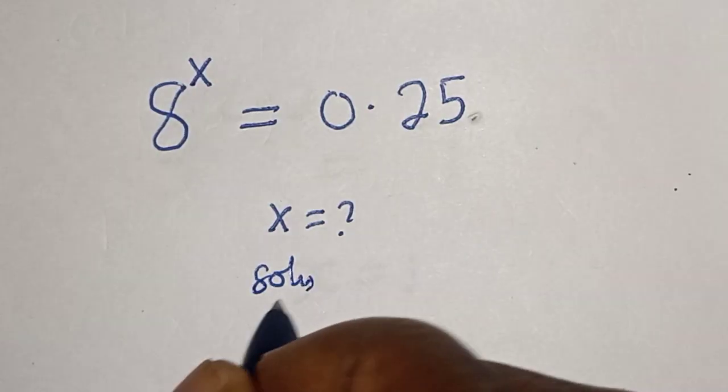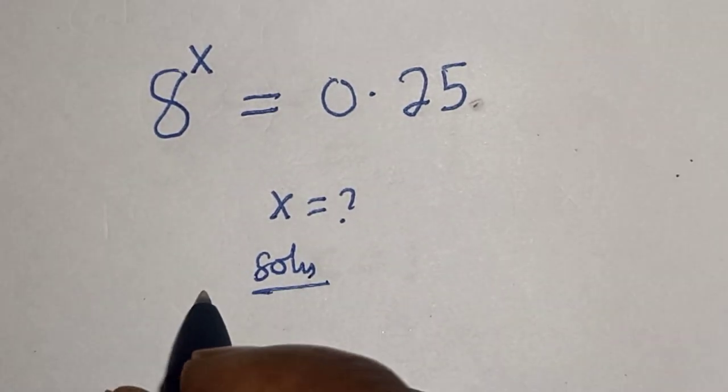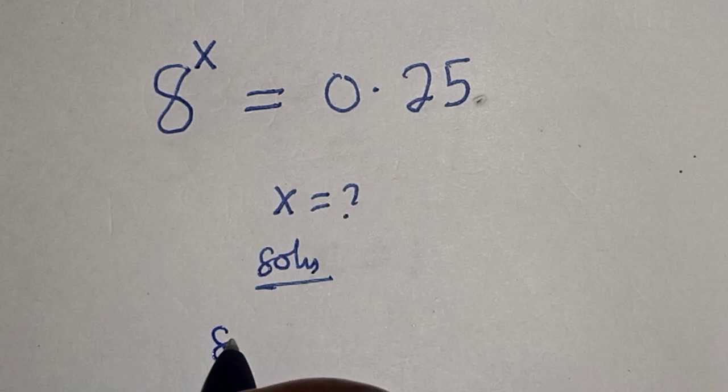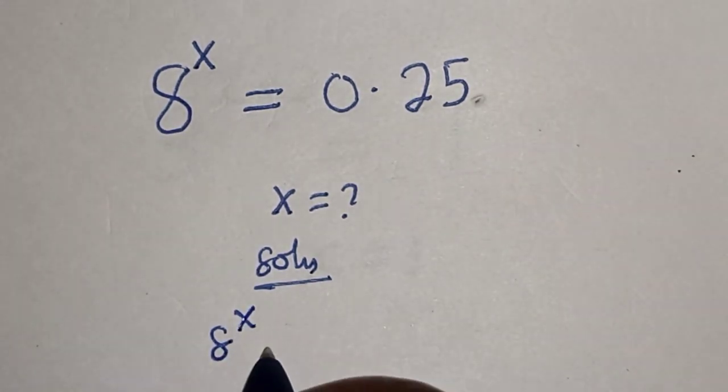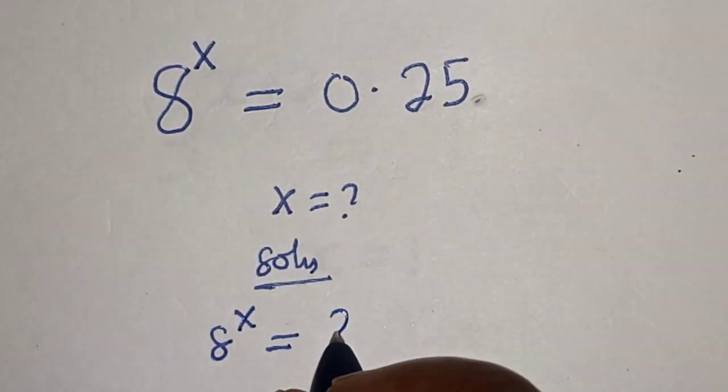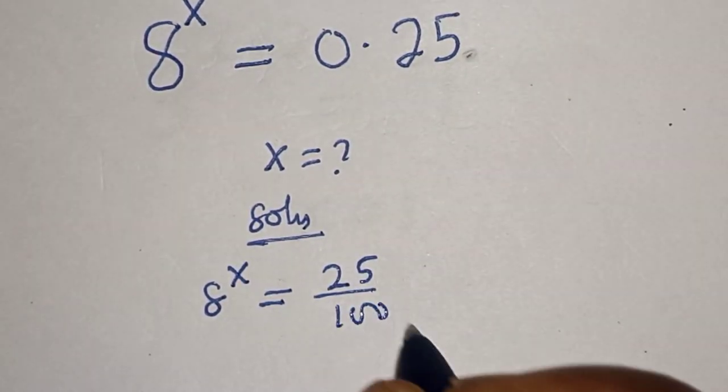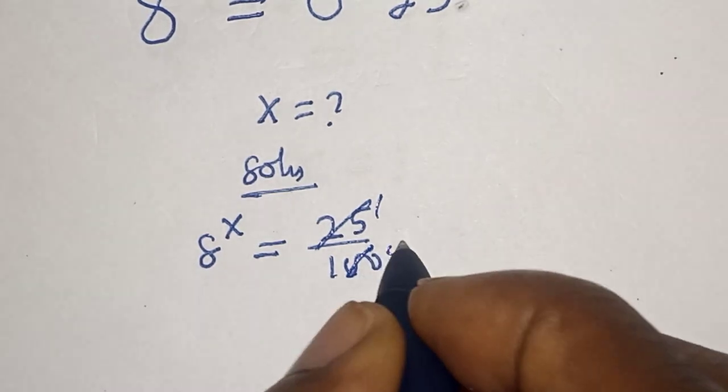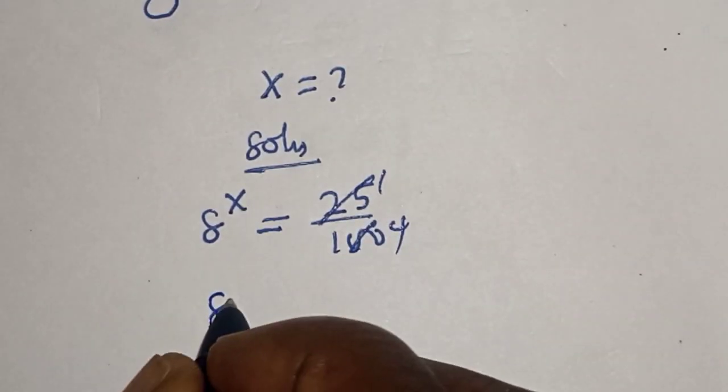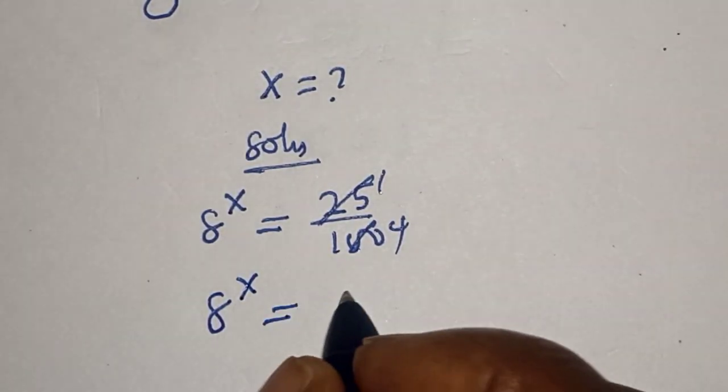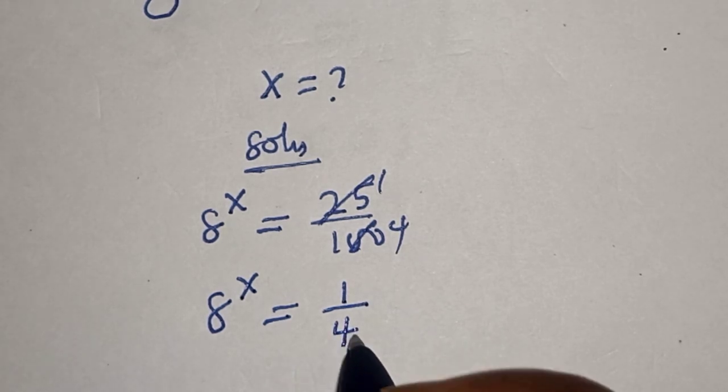Solution. Here, 8 to the power of x equals 0.25, which is 25 over 100. Simplifying: 25 divided by 25 equals 1, and 100 divided by 25 equals 4. So 8 to the power of x equals 1 over 4.